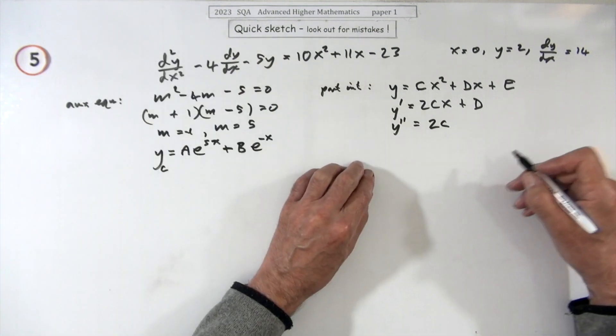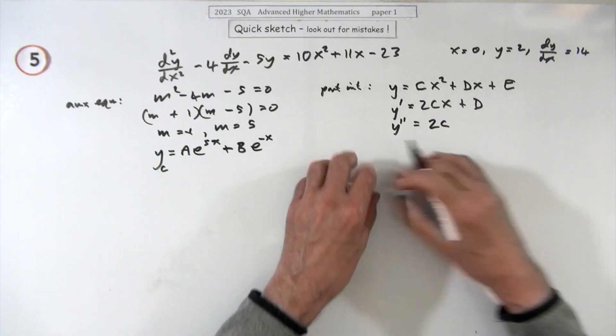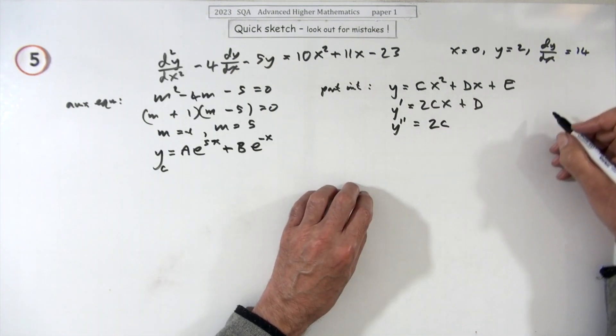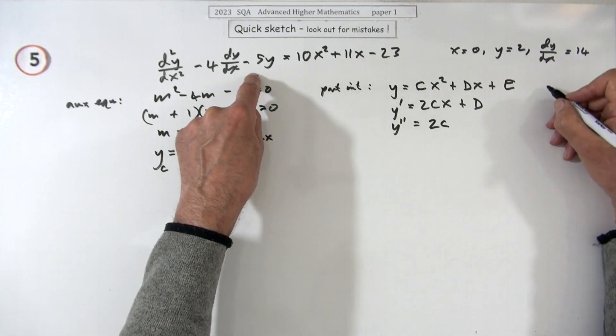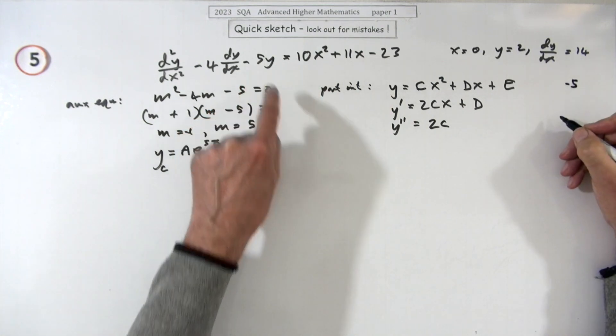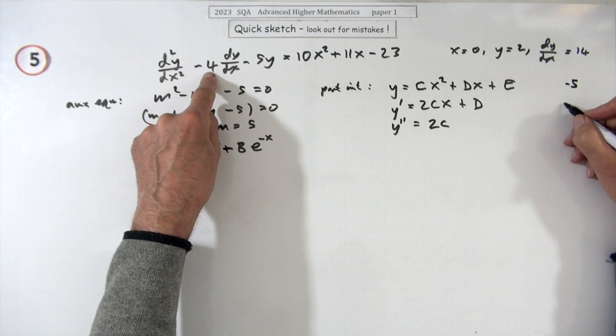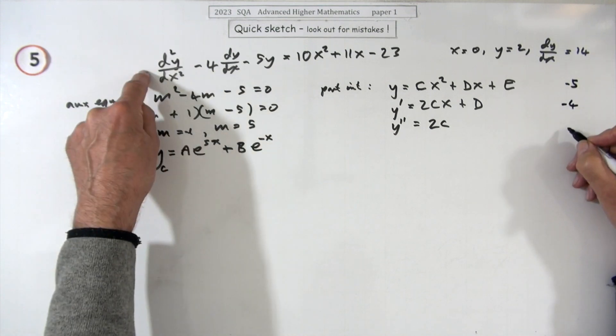Now I need to feed this back into this to see exactly what c, d, and e are. I'm not going to write it all out, I'm just going to take a note. How many do I need of the y? I need minus five of them. Of the y dashed I need minus four of them, and this I just need one of them.